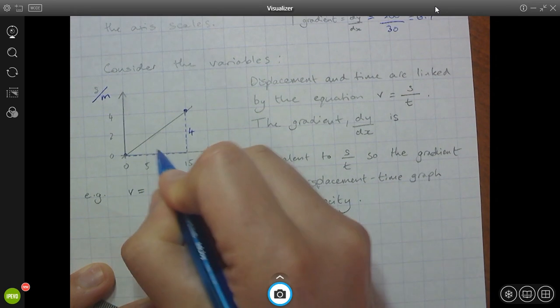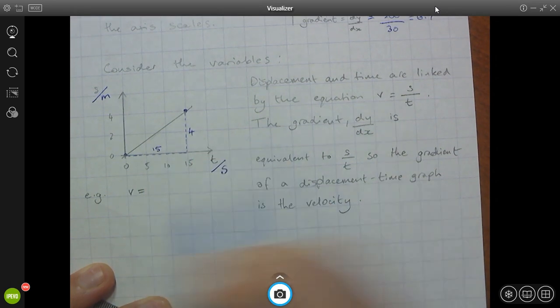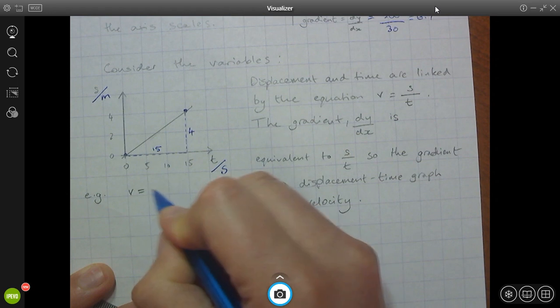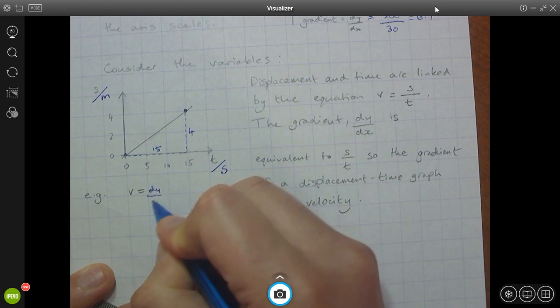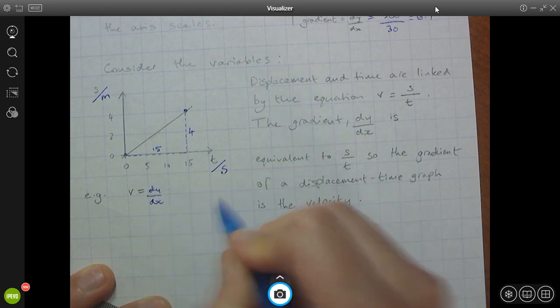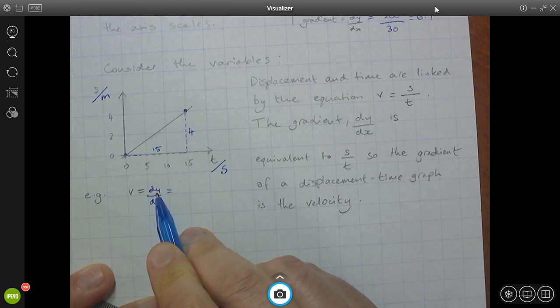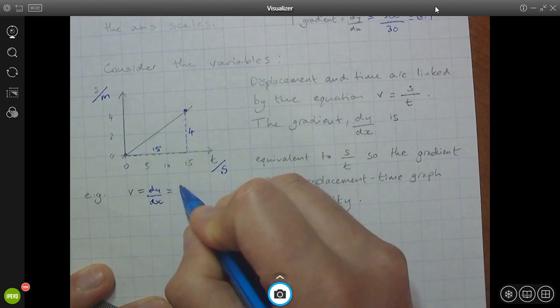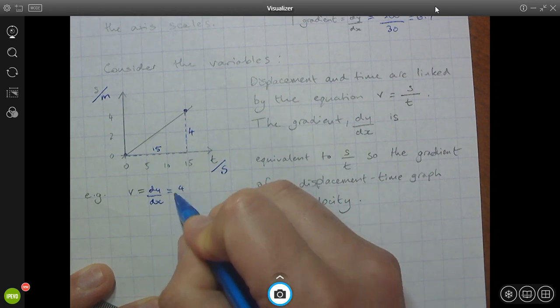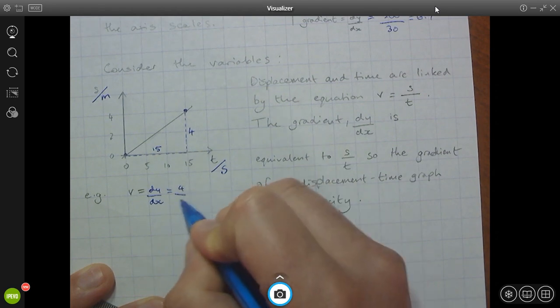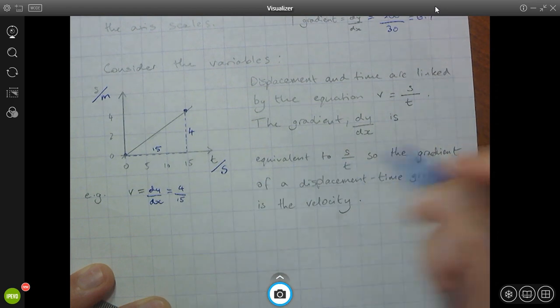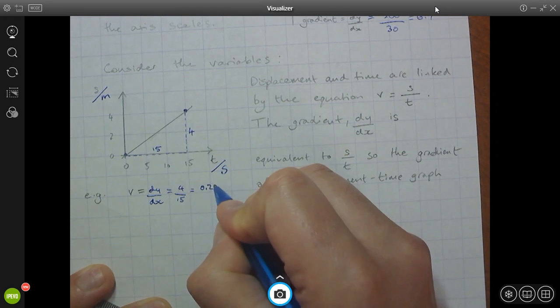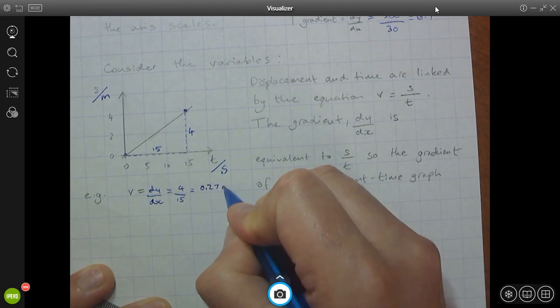And I would calculate the length of this. It's 15 minus zero. Sorry, that's 15. And here I would write dy by dx as my gradient. And I would write down, well, the change in y is 4. And the change in x is 15. And putting that into a calculator, it gives me an answer of 0.27.